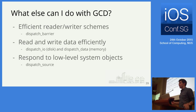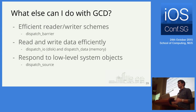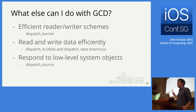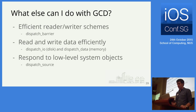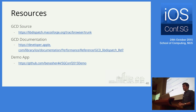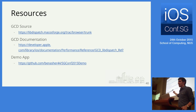A few other GCD features I didn't cover: dispatch barrier APIs for efficient reader-writer schemes with caches; dispatch I/O and dispatch data for efficient reading and writing of data; and dispatch source for responding to low-level system objects like Mach ports. The GitHub repo with demo solutions will be pushed after the talk.